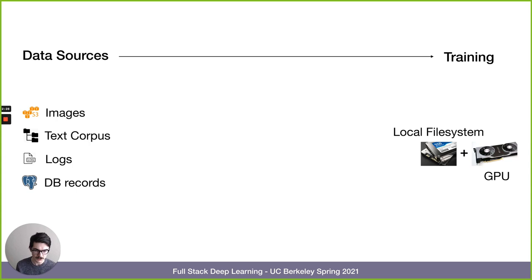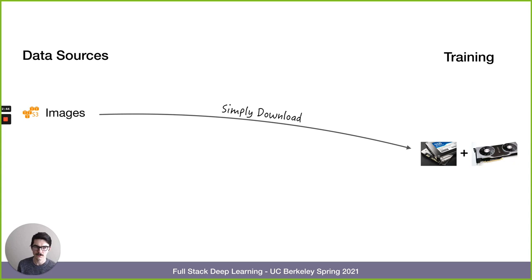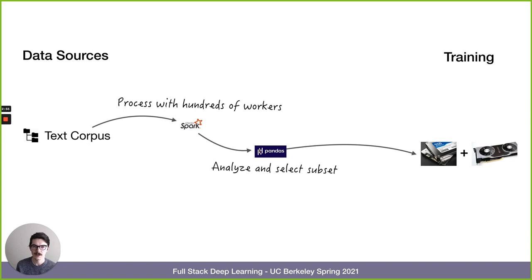The way you're going to get data over to a trainable format is different for every single project, every single company - it's going to be a unique path. For example, maybe you're training on ImageNet and all the images are just S3 URLs and all you have to do is download them to the local file system. Or maybe you have text files you crawled, use Spark to process them on a cluster, get a data frame, select a subset, and get that subset over to a GPU.